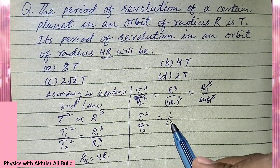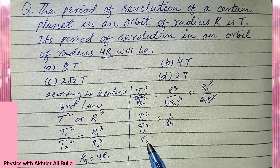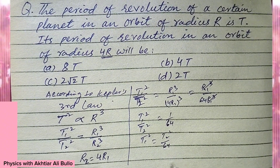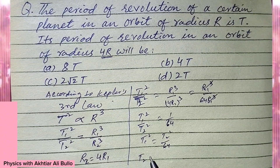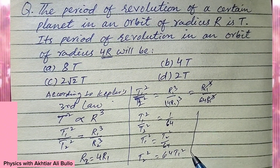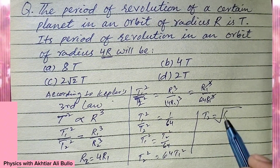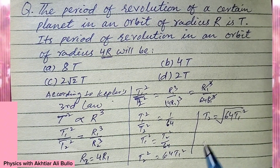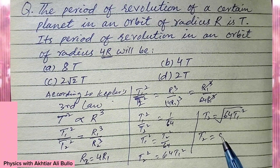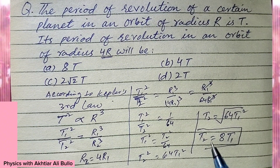So T1² / T2² is equal to 1/64. Therefore T1² = T2² / 64, so T2² = 64 × T1². Taking the square root, since √64 = 8 and √T1² = T1, T2 is obtained as 8T1.